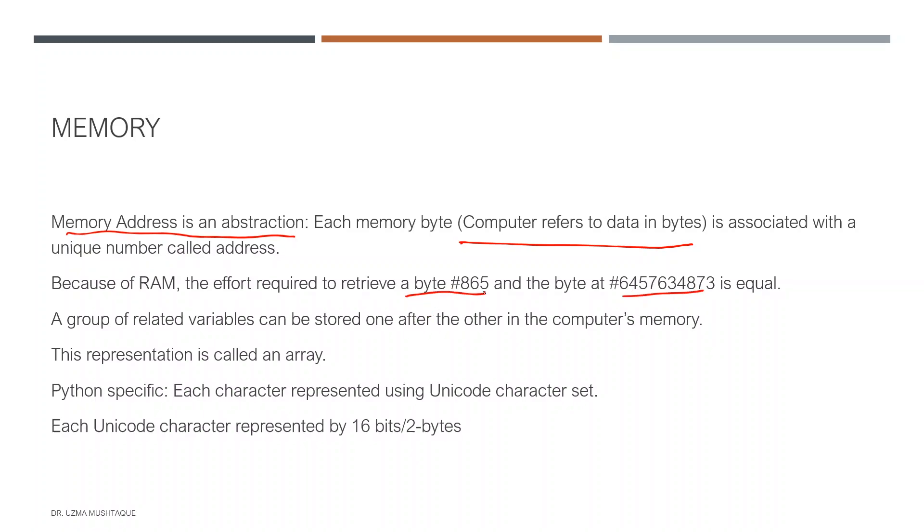A group of related variables can be stored one after the other in computer memory. If we save elements one after the other—let's say this was memory location 210, this was 211, 212, and so on—and we could save elements 1, 2, 3, 4 sequentially, we refer to this object as an array. This is a representation of an array.